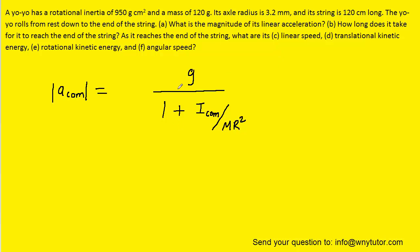We simply need to plug in all the known values. We'll have to change the rotational inertia into the standard unit of kilograms meters squared and the mass into kilograms. Alternatively, we can keep the mass and the rotational inertia in the given units and use 980 centimeters per second squared for g rather than 9.8 meters per second squared. That would actually probably be easier, so we'll go ahead and do that.